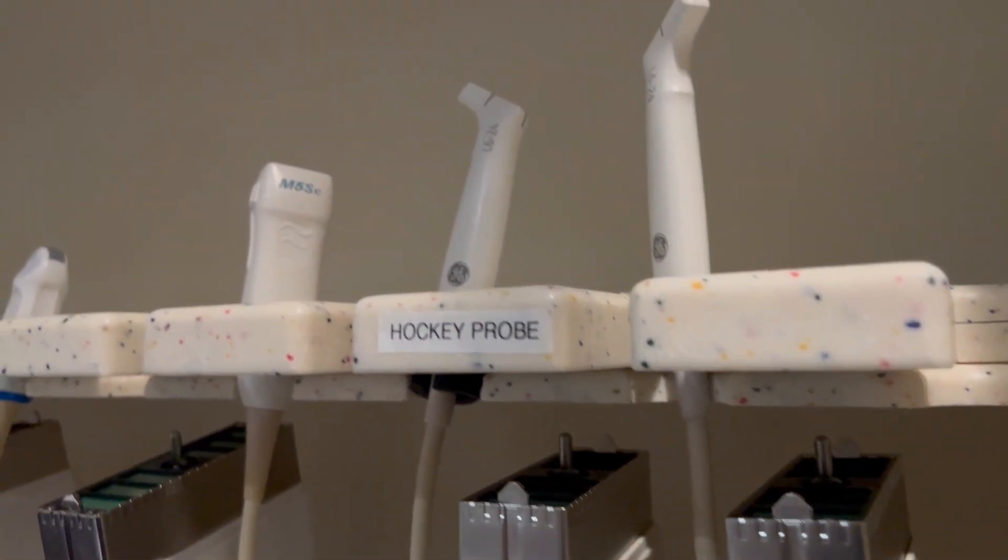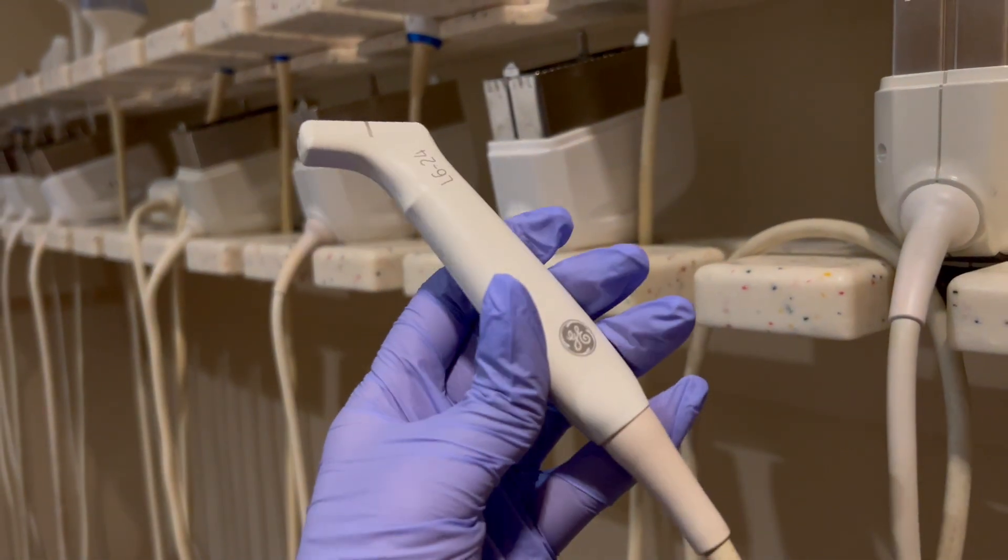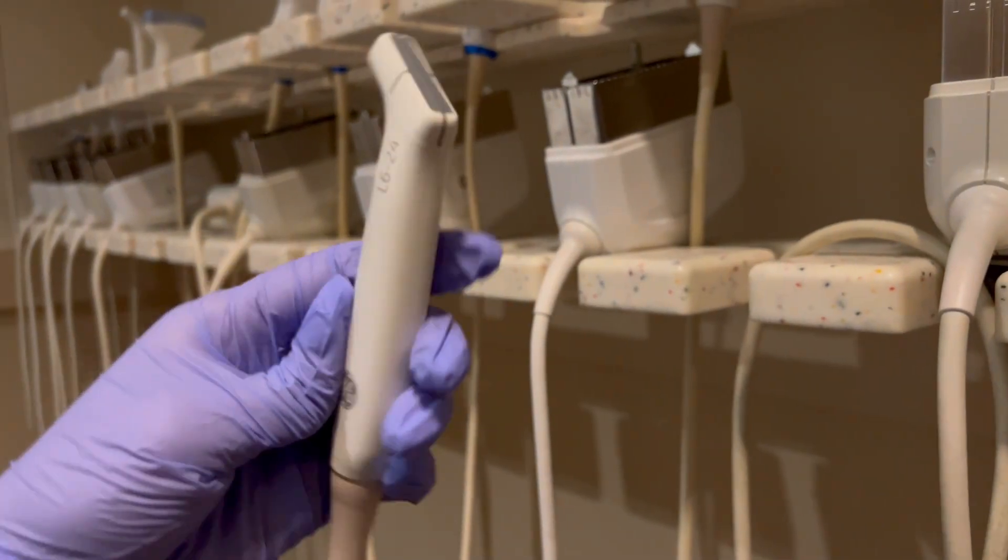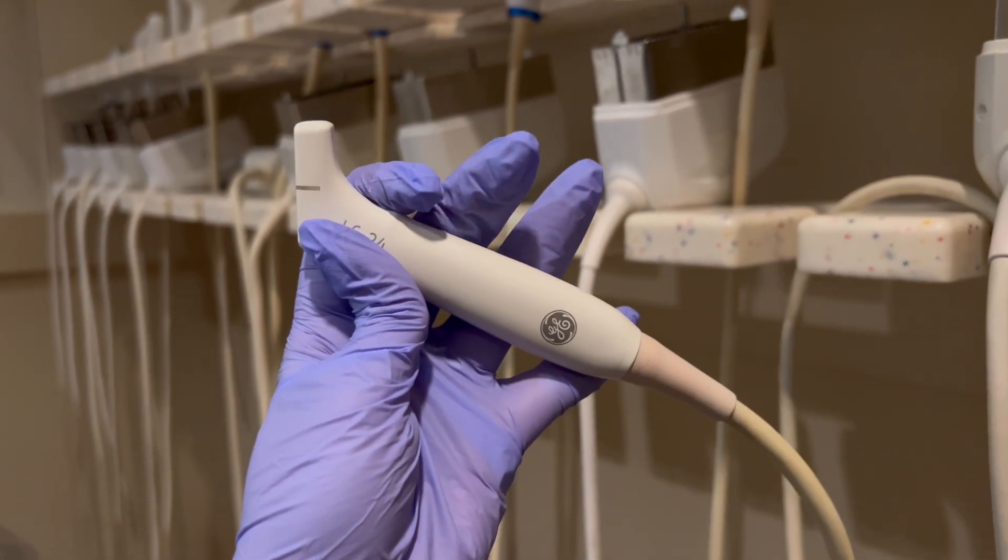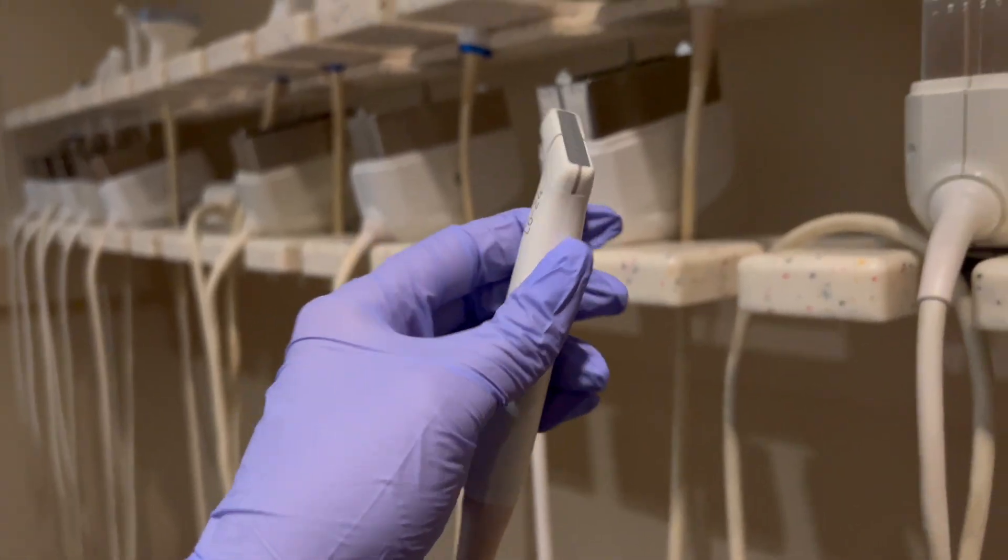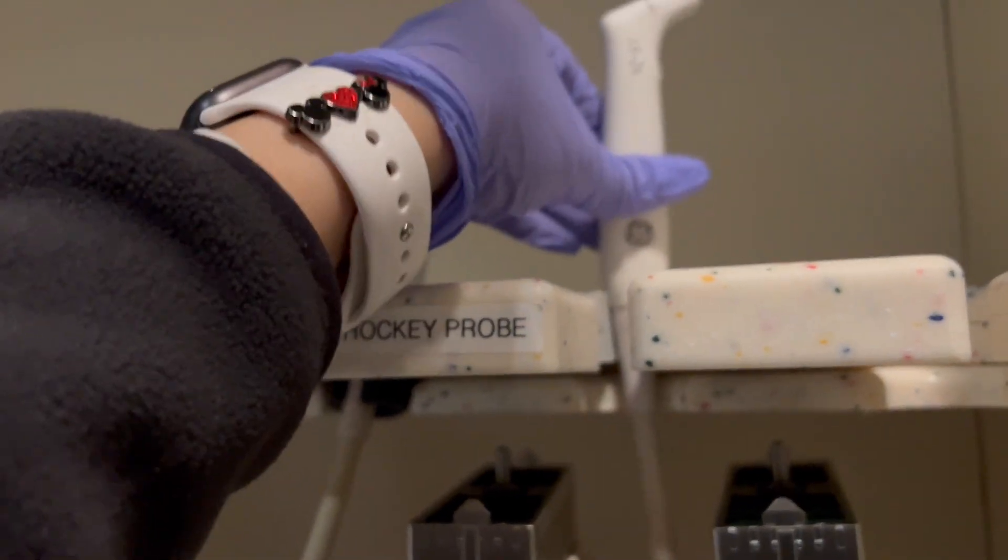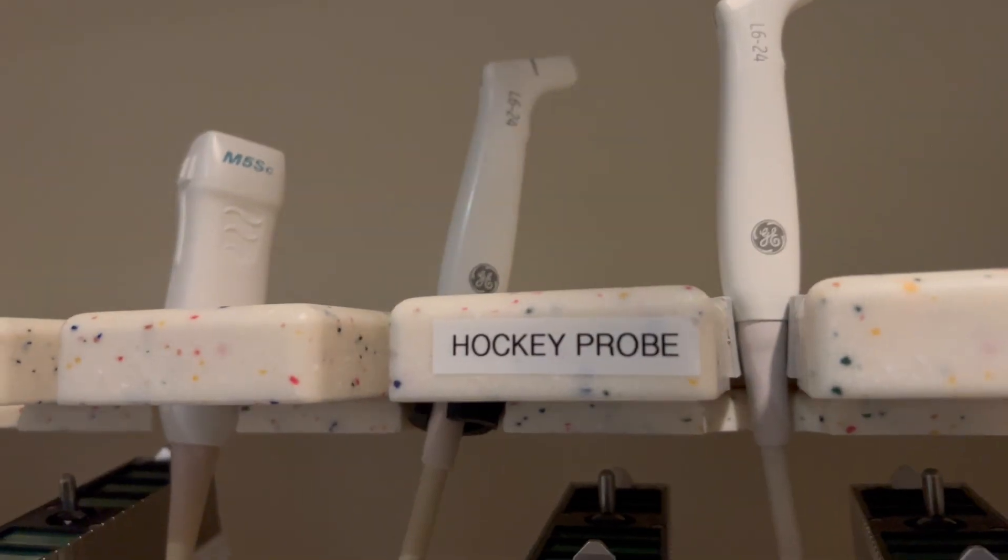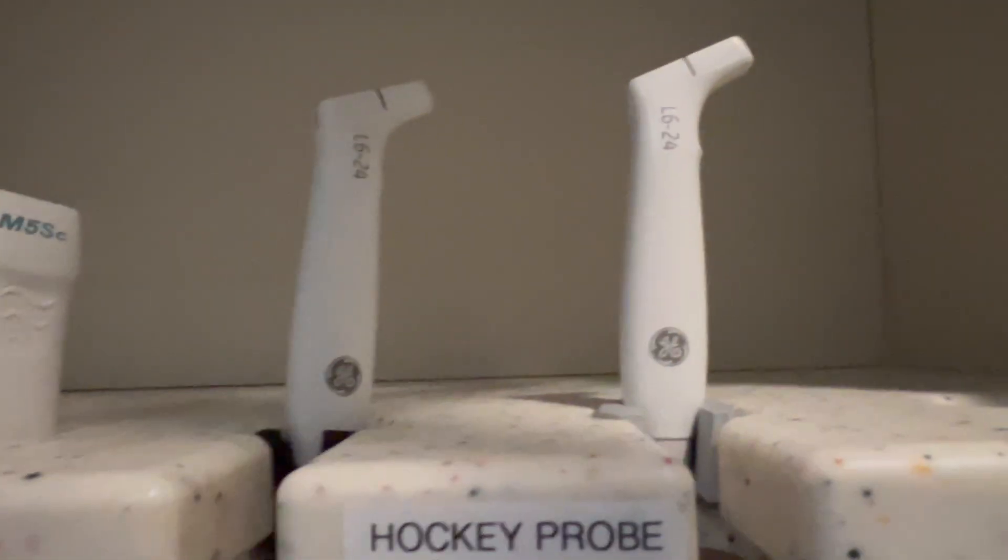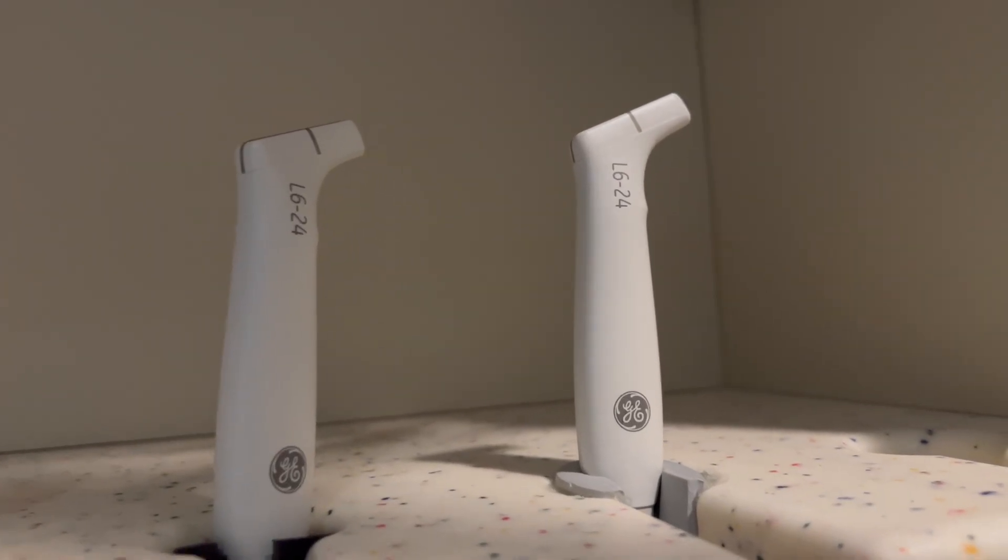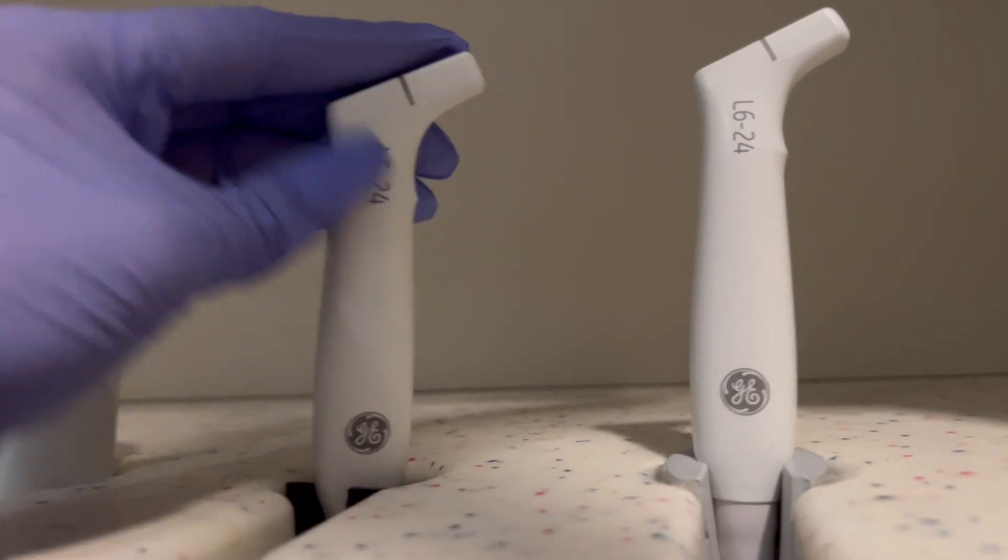A probe that we use for vascular on pediatrics is this hockey stick probe. We call it the hockey stick probe because it looks like a little tiny hockey stick, but essentially it's for superficial structures typically on a baby because it has a very high frequency. We use it on arteries or veins and sometimes testicles on babies. A lot of places don't have these that I have seen, but if you have pediatrics that's more commonly what you're going to use it for.